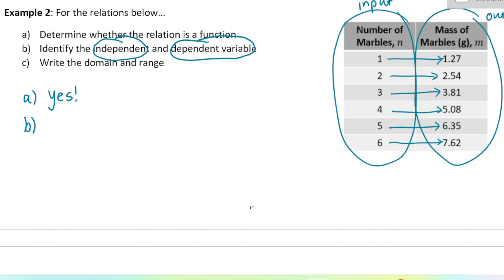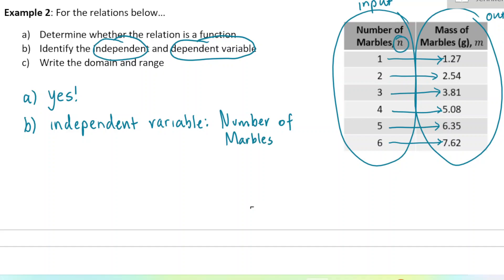When we have a relationship, we always make the input the independent variable — it is independent of the other. The mass of the marbles depends on how many marbles you have. The independent variable is always listed first, always like the X on the X-axis. It's always the input variable. So the independent variable would be the number of marbles, denoted with the variable N. In an arrow diagram it would be on the left side; in ordered pairs it would be listed first.